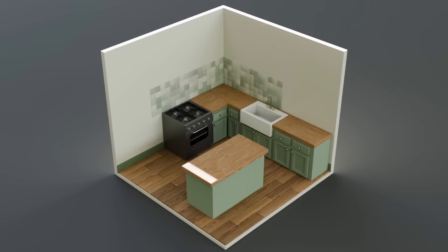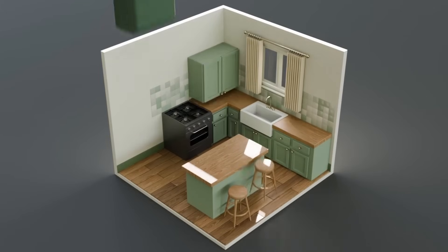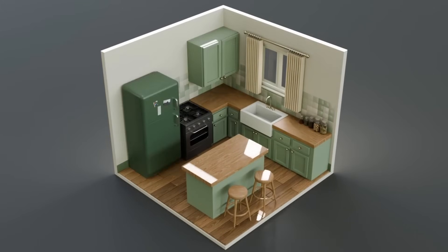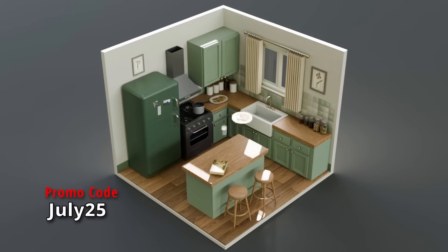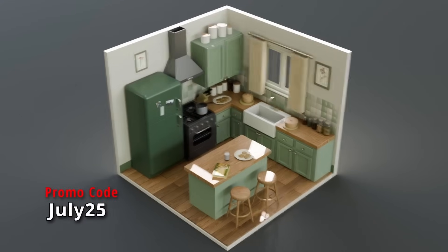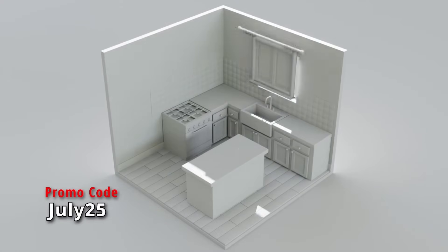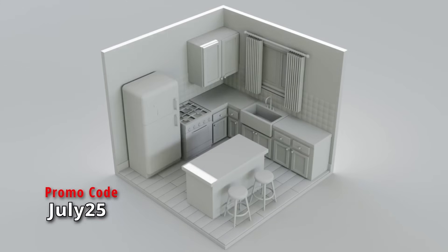Before we move on, I have a new course available called Isometric Spaces. This is a beginner-friendly course designed to show you how to make isometric style graphics in Blender. In module one, I'll show you how to make a cute stylized kitchen animation. And in future modules, we'll cover environments like cyberpunk buildings and metro stations. Right now, you can save 25% on this course or any of my other courses over at Gumroad if you use the code JULY25 at checkout.